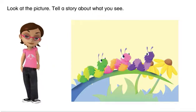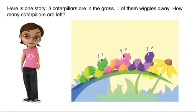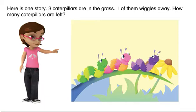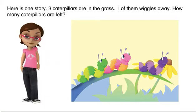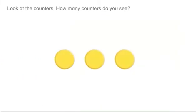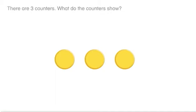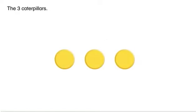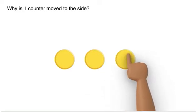Look at the picture and tell a story about what you see. Here is one story: three caterpillars are in the grass, and one of them wiggles away. How many caterpillars are left? Look at the counters — how many counters do you see? There are three counters. What do the counters show? The three caterpillars.